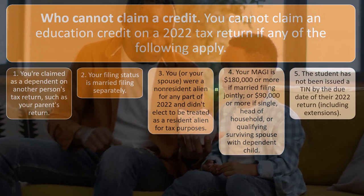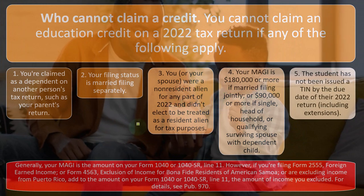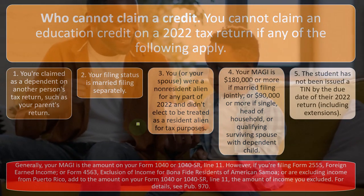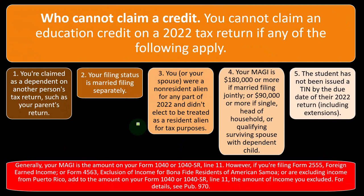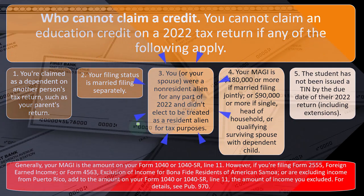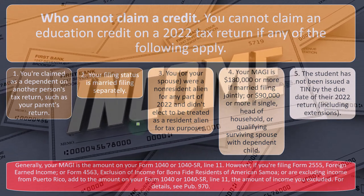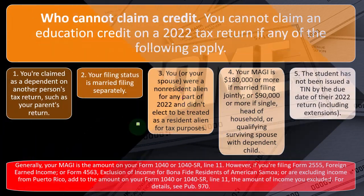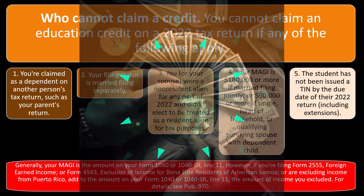Additional disqualifiers: (3) you or your spouse were a non-resident alien for any part of 2022 and didn't elect to be treated as a resident alien for tax purposes; (4) your MAGI — modified adjusted gross income — is $180,000 or more if married filing jointly, or $90,000 or more if single, head of household, or qualifying surviving spouse with a dependent child; (5) the student has not been issued a TIN by the due date of their 2022 return, including extensions. Generally, your MAGI is the amount on Form 1040 or 1040-SR, Line 11 — your AGI — however, if you're filing Form 2555 for foreign earned income or Form 4563 for exclusion of income for bona fide residents of American Samoa, or excluding income from Puerto Rico, you add back that excluded income. Consult Publication 970 or tax software for those situations.